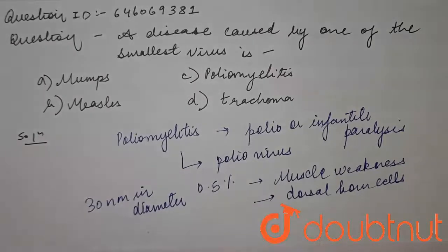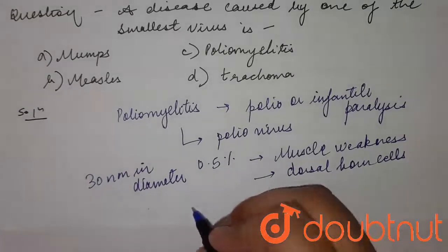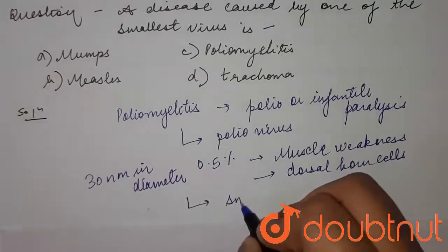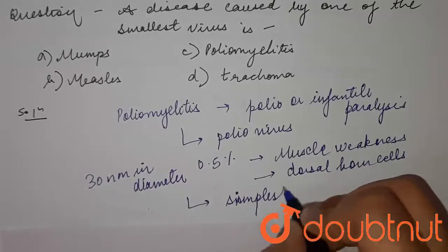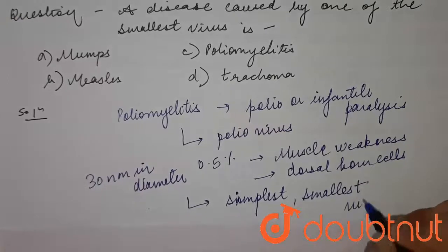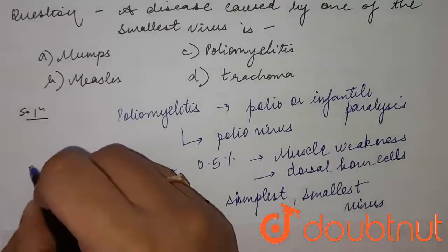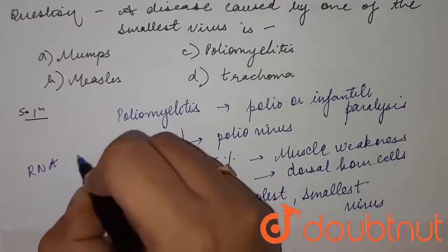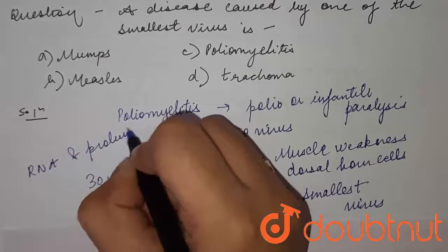Because of its short genome and icosahedral symmetry, it is the smallest and simplest virus causing disease. It has a very simple composition which includes RNA and a protein coat.